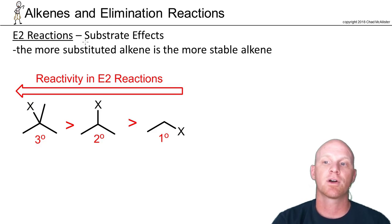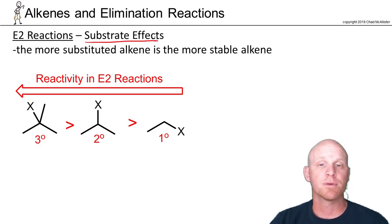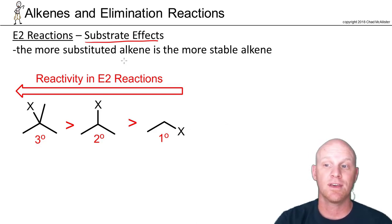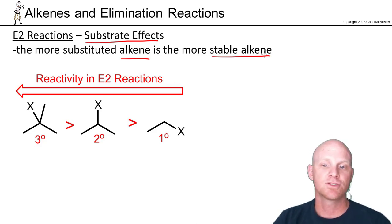So the second thing we're going to take a look at for E2 reactions are substrate effects. And in this case, it's pretty simple. The more substituted alkyl halide is going to be more reactive. And the idea is that the more substituted alkene is the more stable alkene. So if you start with a more substituted alkyl halide, you'll form a more substituted alkene. And with it being lower energy, you'll actually have a lower activation energy leading to it as well. So a more substituted alkyl halide, in this case tertiary, will be the most reactive, then secondary, and then primary. And then methyl halides don't do elimination, and there's no rocket science there. If you want to make a carbon-carbon double bond, you have to have at least two carbons, and methyl halides only have one. So don't have to worry about methyl halides in E2 reactions. But tertiary the most reactive, primary the least reactive in E2 reactions.